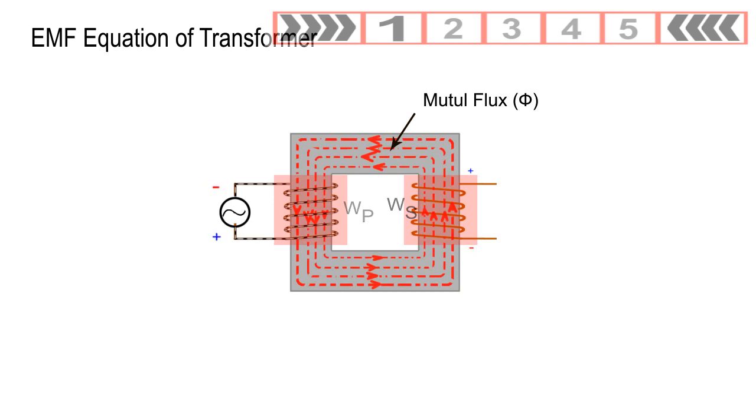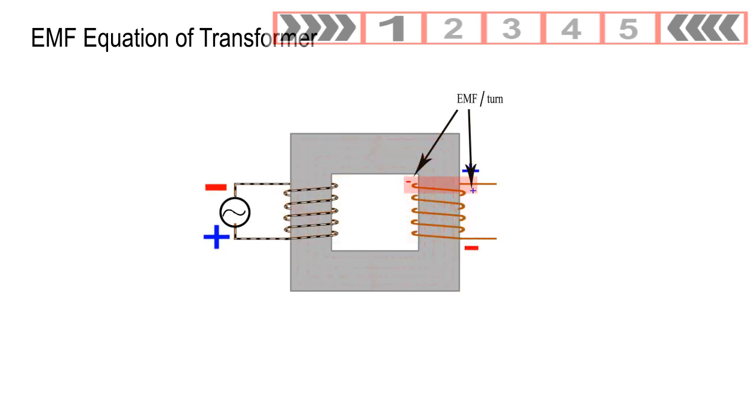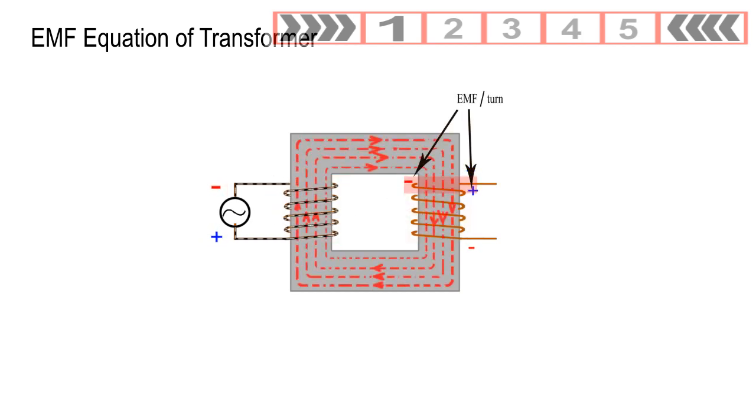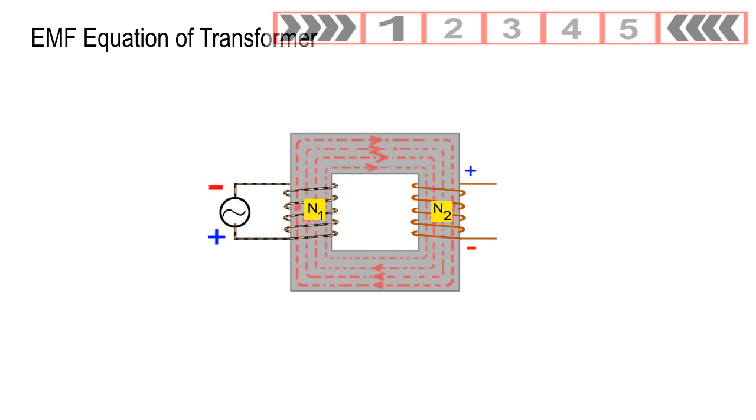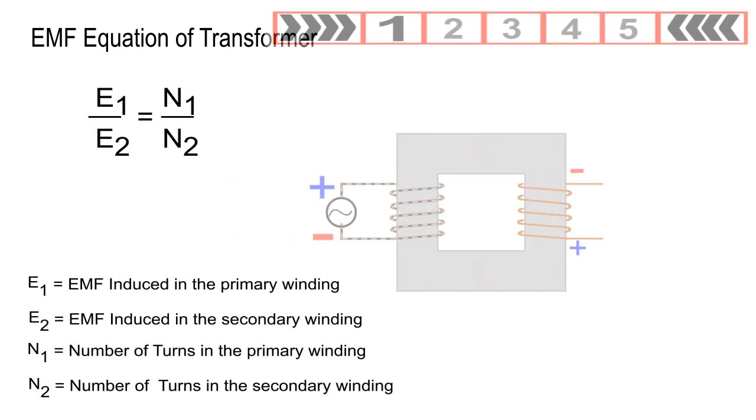Hence, it must induce the same EMF per turn in each winding. The total induced EMF in each winding must be proportional to the number of turns in each winding, i.e., E1 by E2 must be equal to N1 by N2.